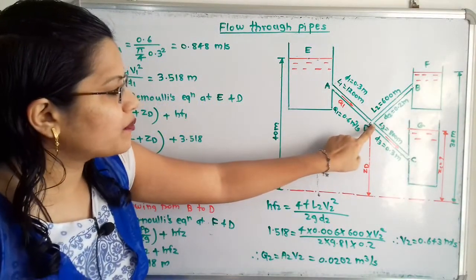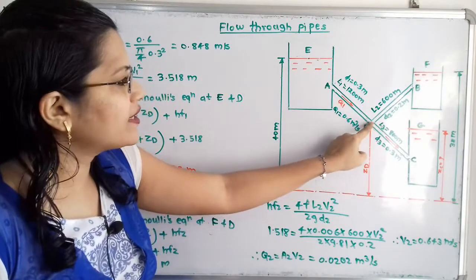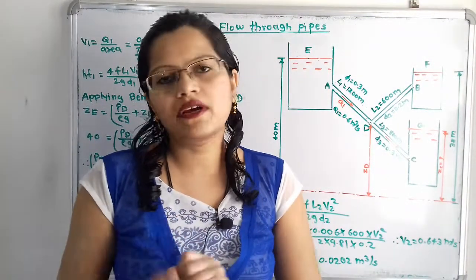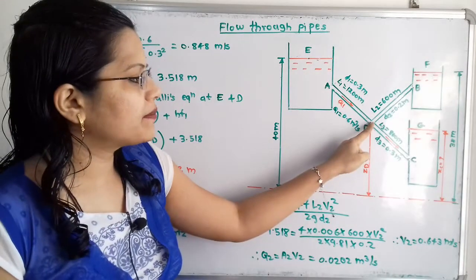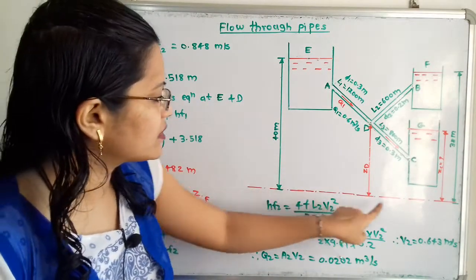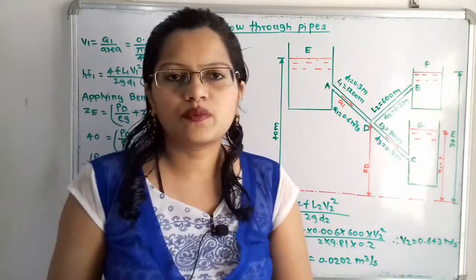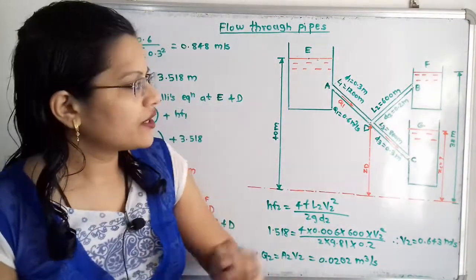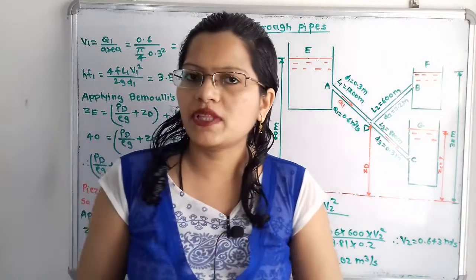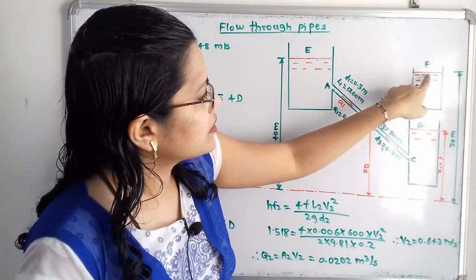When the piezometric head at point D is more than the piezometric head at point B, flow goes from D to B. The piezometric head is pressure head plus datum head — that is P_D / ρg + Z_D. At reservoir B, the free surface is open to atmosphere, so pressure head is 0 and we take only the datum head, which is the height of the water level in reservoir B.